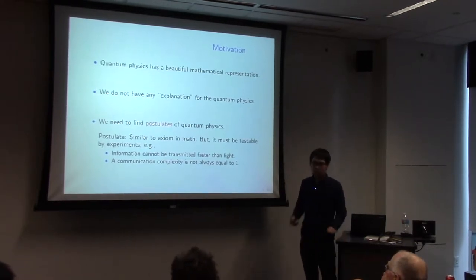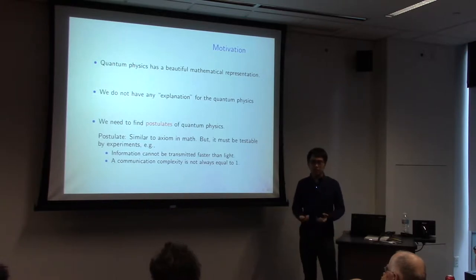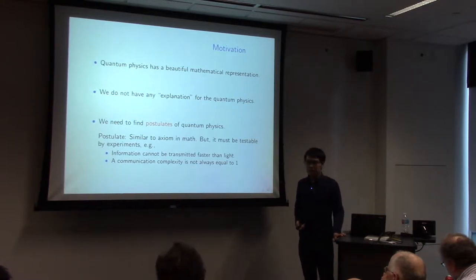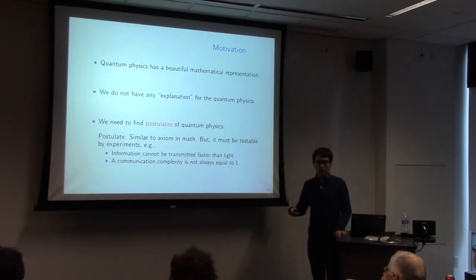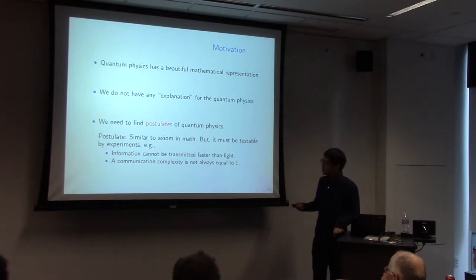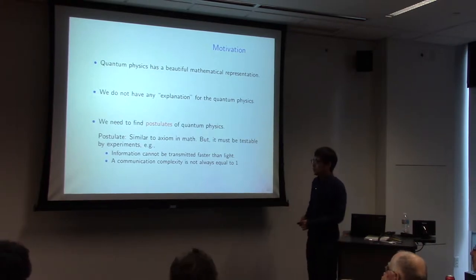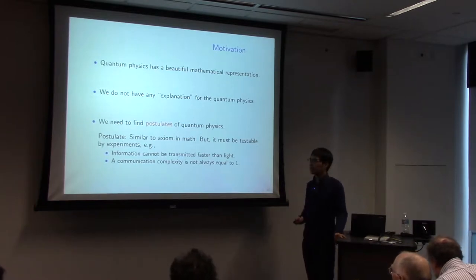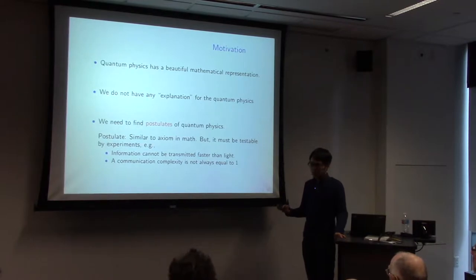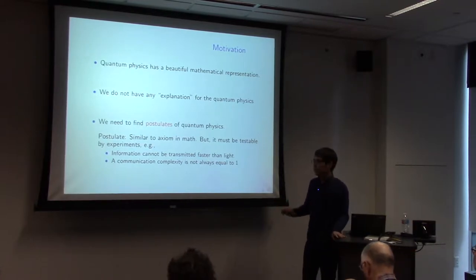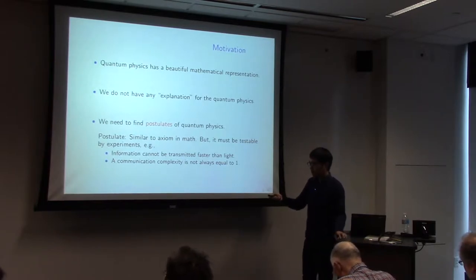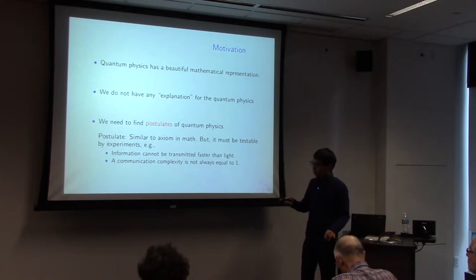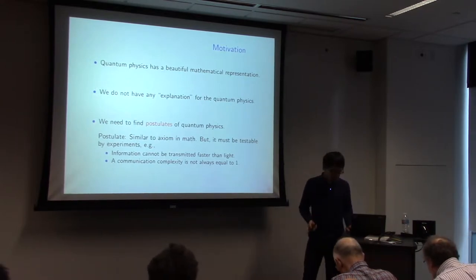But we do not have any explanation for quantum physics. Usually in quantum physics we start from Hilbert space, and a pure state is an element of Hilbert space, and a mixed state is also an element of Hilbert space. It is completely mathematics, and there is no explanation. So we want to find a postulate of quantum physics. They are similar to an axiom in math, but with meaning. A postulate is something like: information cannot be transmitted faster than light, or communication complexity is not always equal to 1. Our goal is to find a postulate for quantum physics.